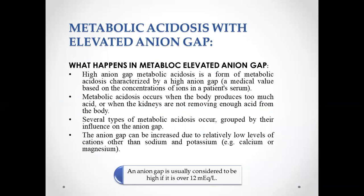Before proceeding towards a case study, we must know about the condition, causes, and diagnostic criteria. Metabolic acidosis with elevated anion gap is a form of metabolic acidosis generally characterized by a high anion gap. This occurs because the body is producing too much acid or the kidneys are not removing enough acid. A second reason is relatively low levels of cations, causing increased anion concentration in blood serum. An anion gap is considered high if it is over 12 mEq/L.